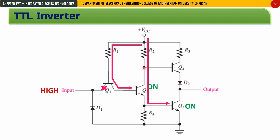Since the voltage at the base of Q4 is low, Q4 is OFF. With Q4 OFF and Q3 ON, the output is taken from ground through the closed switch of Q3, so the output is LOW. This is the case when the input is HIGH.